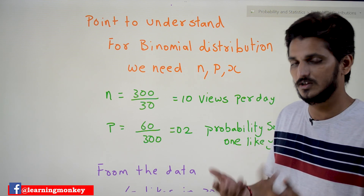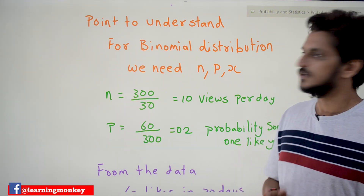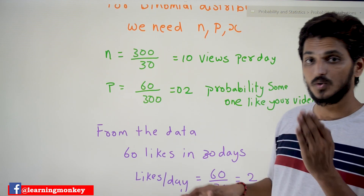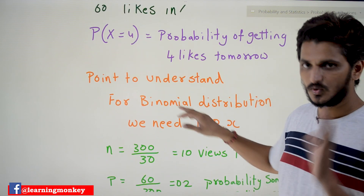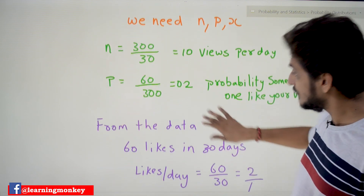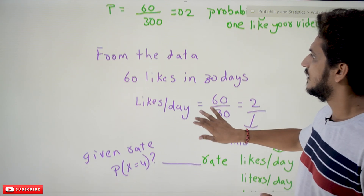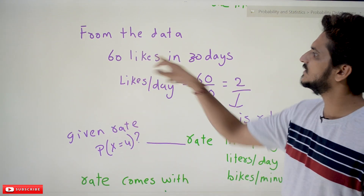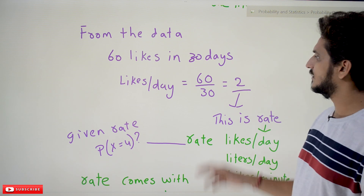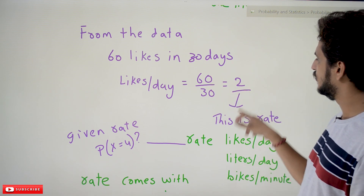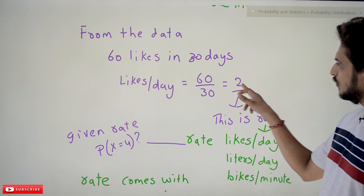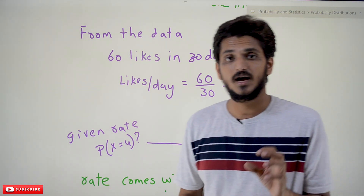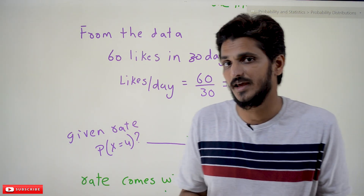With n and p given, we applied binomial distribution and found the probability of X equals 4. Now here is the key point: from the data, 60 likes in 30 days converts to 60 / 30 = 2 likes per day. If someone simply tells you they are getting 2 likes per day, that is the information provided — they do not mention n or p.